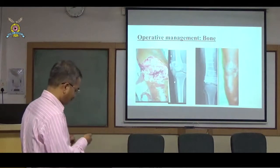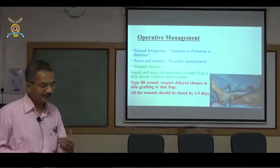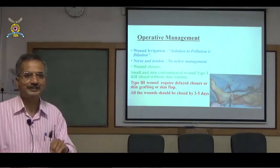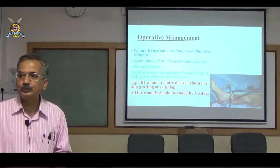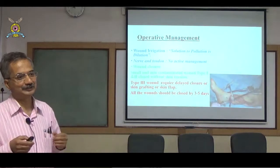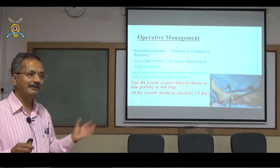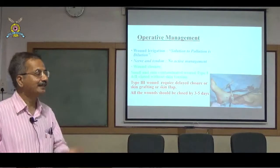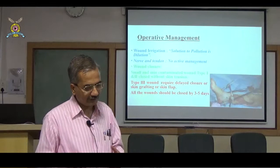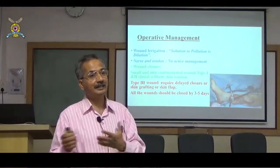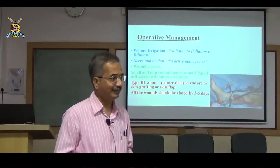Wound irrigation: the principle is 'the solution to pollution is dilution.' Saline is the best antibiotic for soft tissues. For Type I and II: approximately 3 liters of saline irrigation. For Type III: 9 to 12 liters. This follows initial debridement.